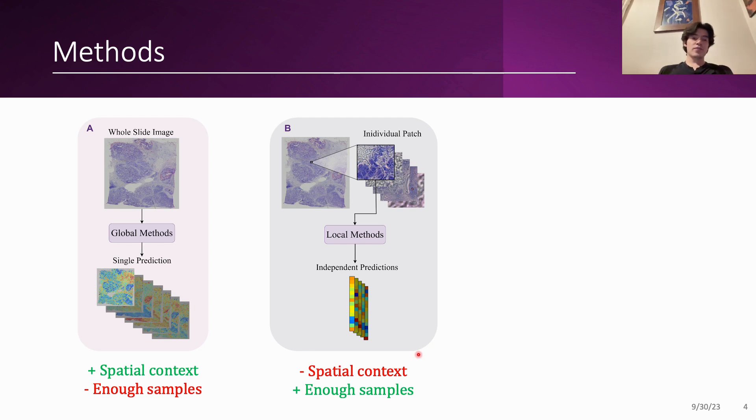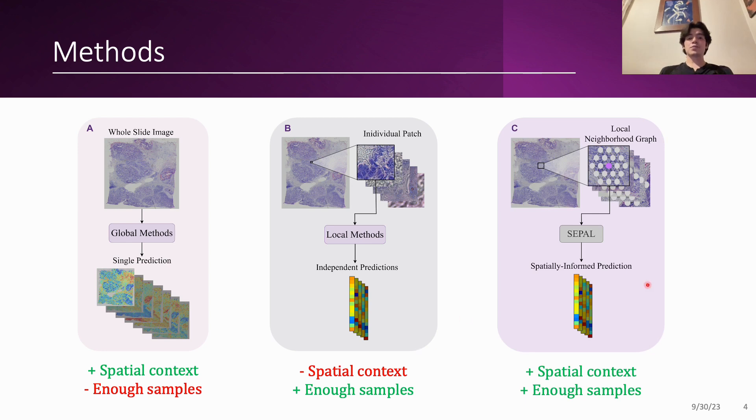So with this division we decided to propose a hybrid method that's called SEPAL which basically makes predictions at the patch level, so a single vector is the output, but it includes spatial context within a local spatial neighborhood graph. This has both advantages of enough samples and including spatial context.